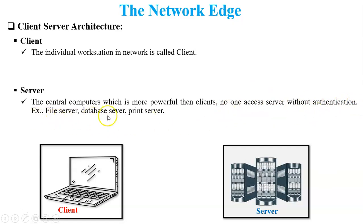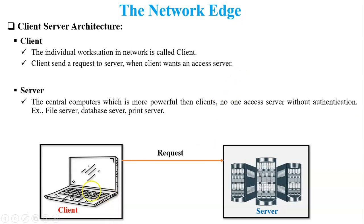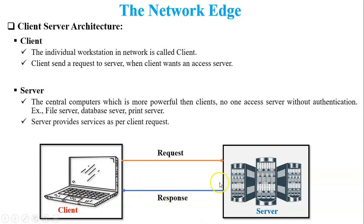Types of servers include: file server, database server, printer server, email server, and many more. How exactly do client and server work with each other? The client will send a request to the server to access services. The server will try to provide those services, and after receiving the request from the client, the server will fulfill it with a response back to the client.